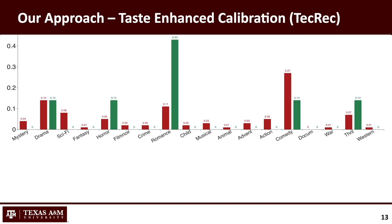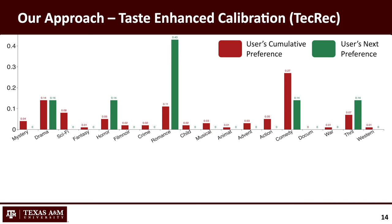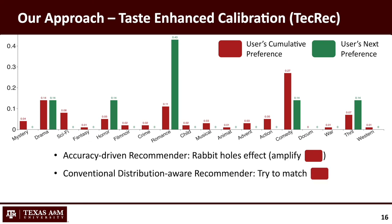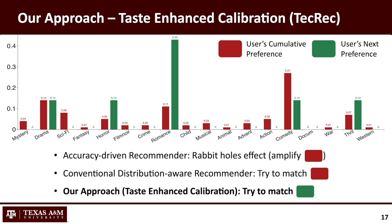Therefore, we briefly introduce our approach, called Taste Enhanced Calibration (TechRec), which can mitigate both the rabbit hole problem and the taste distortion. Given the figure we showed before, the red ones are users' cumulative preferences, and the green ones are ground truth preferences in the next stage. Traditional accuracy-driven recommenders amplify the red distribution and cause the rabbit hole effect. Conventional distribution-aware recommenders try to match the red distribution but bring the new taste distortion problem. Our approach, TechRec, tries to match users' real preference in the next stage — the green one — to mitigate both problems simultaneously.